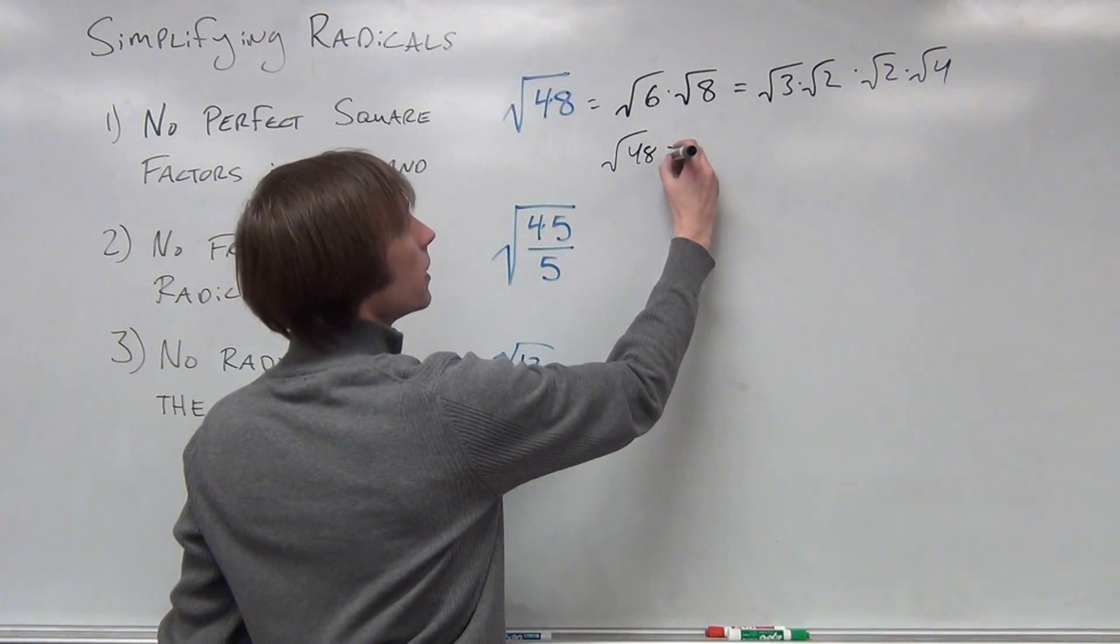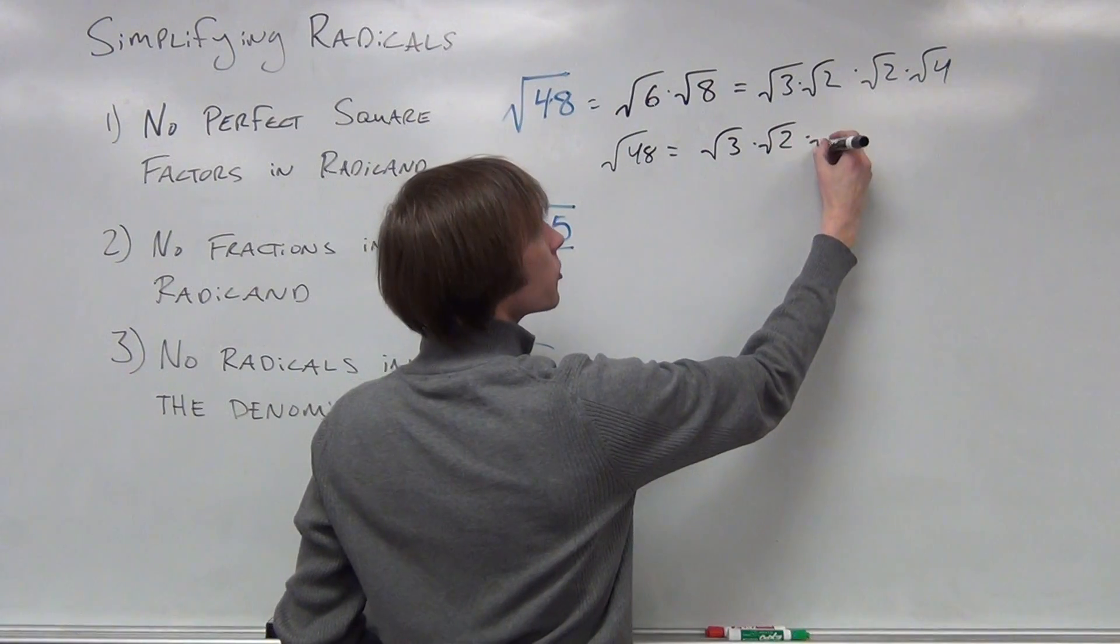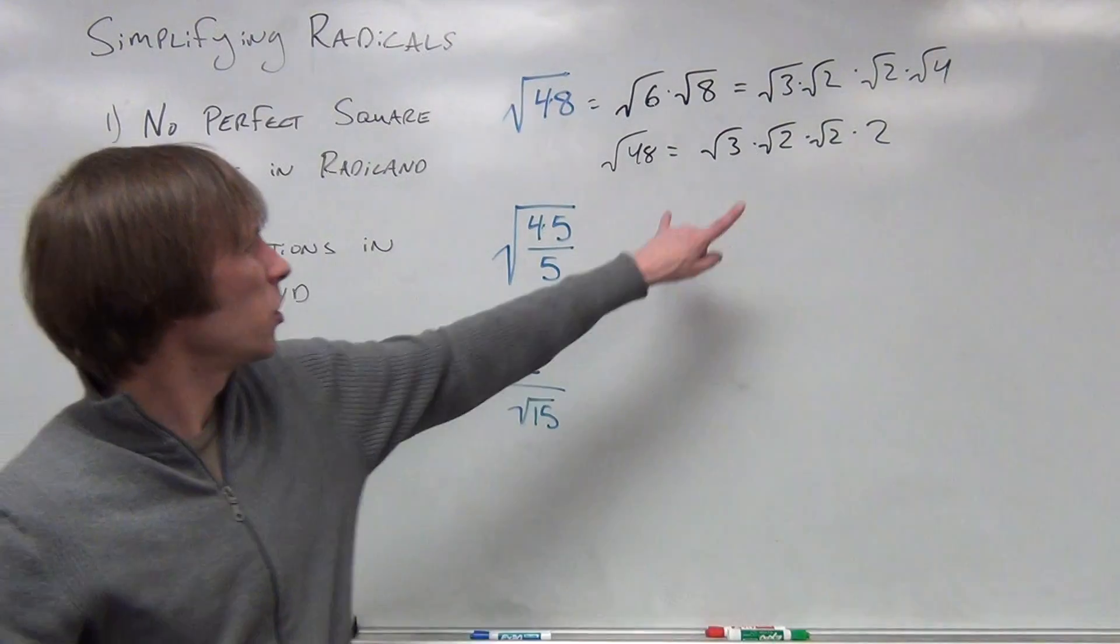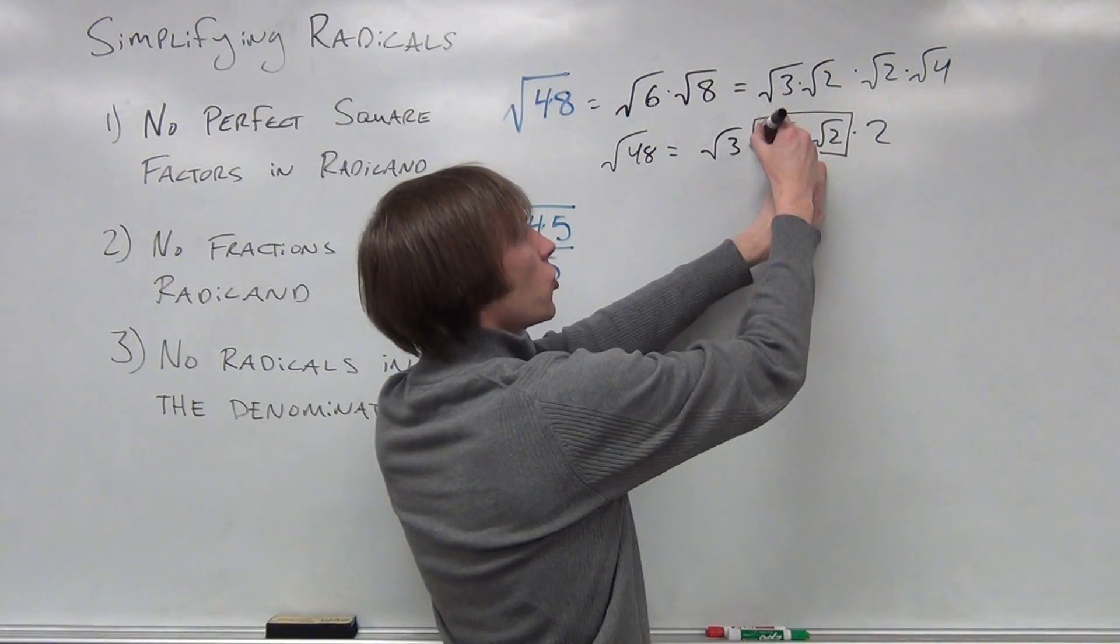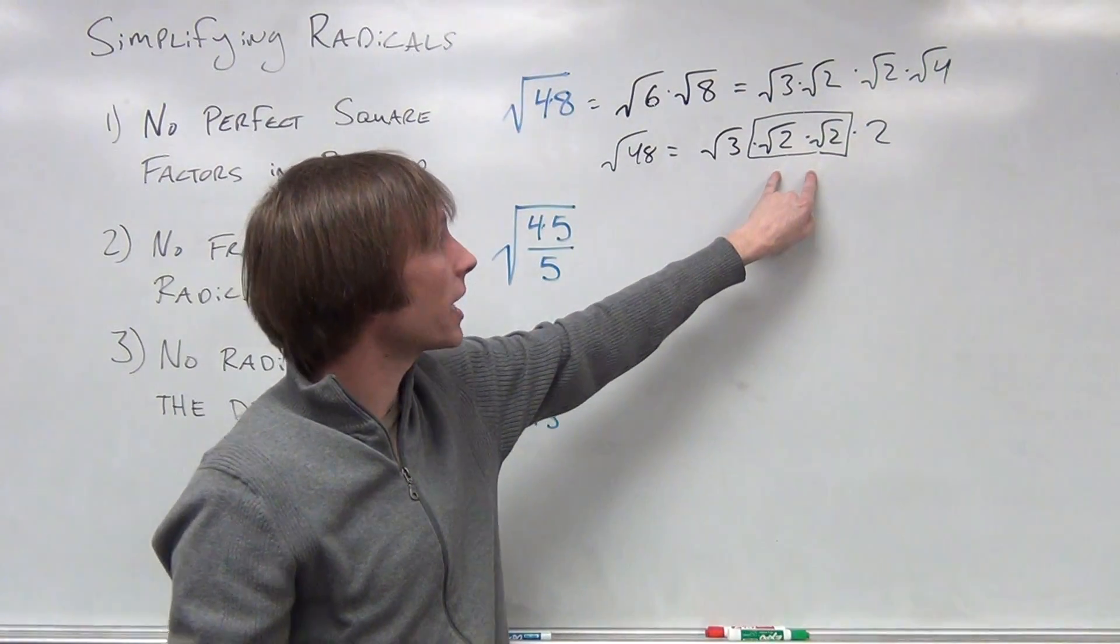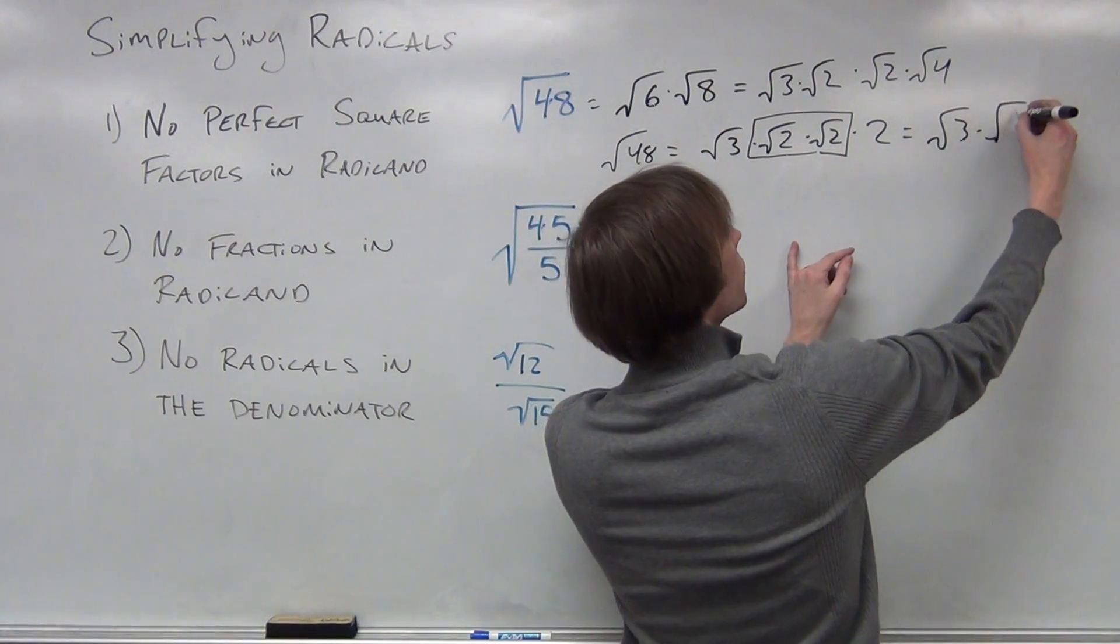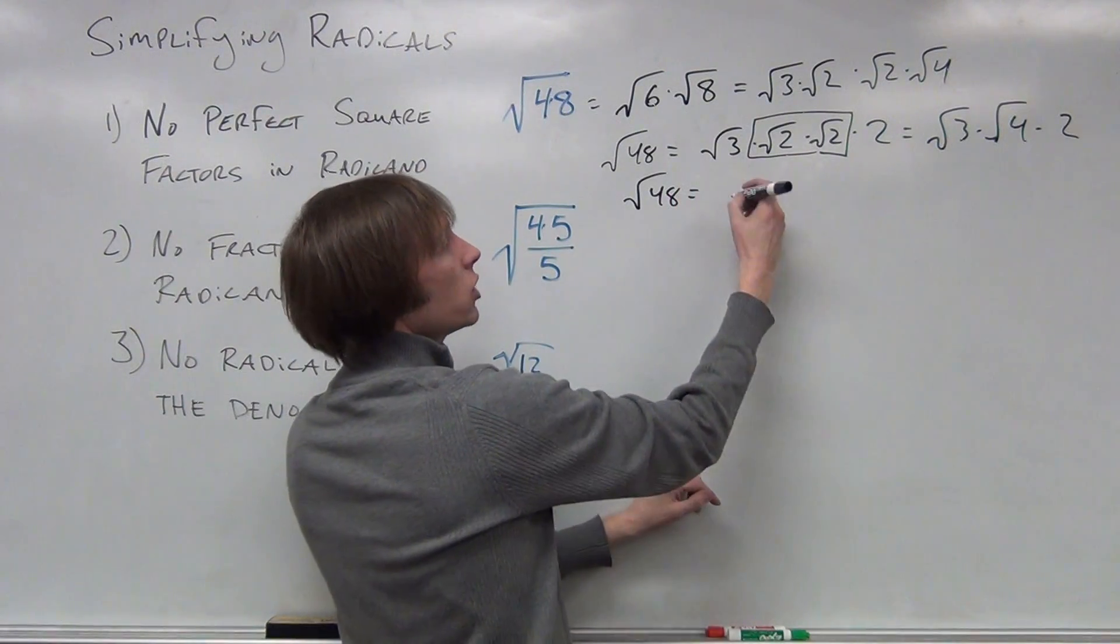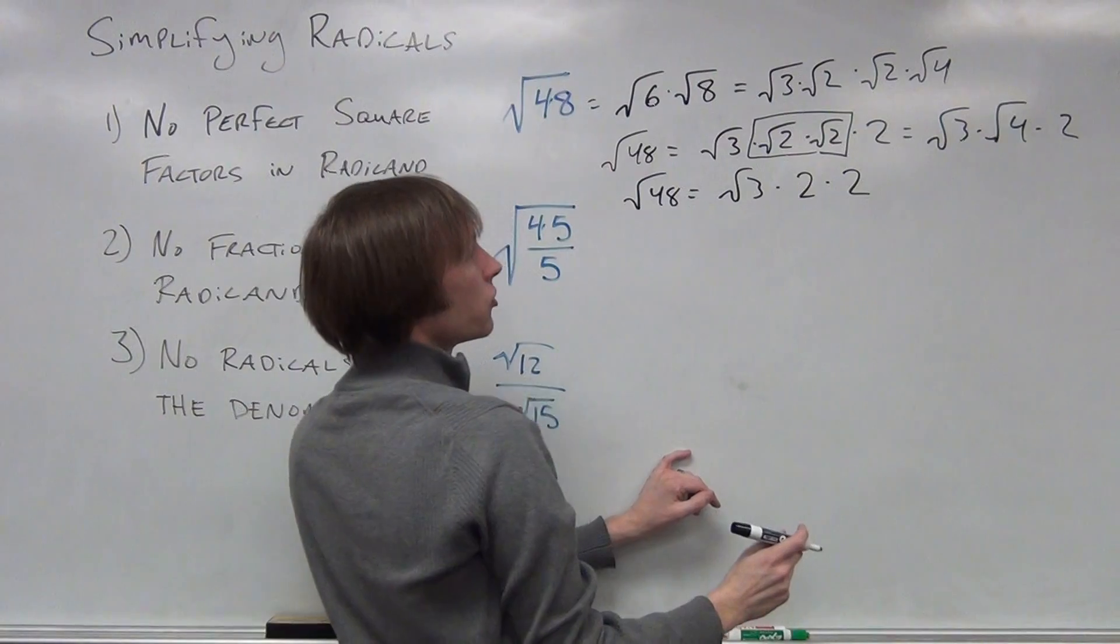The square root of 48 is equal to the square root of 3 times the square root of 2 times the square root of 2 times 2. All right. We're not done yet. We've got all of these to put together. Wait a second. I've got a square root of 2 times the square root of 2 in here. We know that that is going to give us a square root of 4. Square root of 3 times square root of 4 times 2.